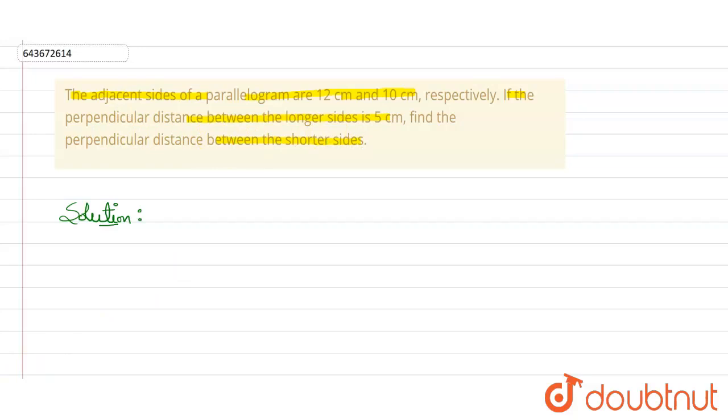Let me draw a parallelogram first. So this is the parallelogram ABCD. It is given that here, its adjacent sides are 12 cm and 10 cm. So this is the longer side, so it will be 12 cm, this will be 10, similarly this will also be 12 and this will also be 10.